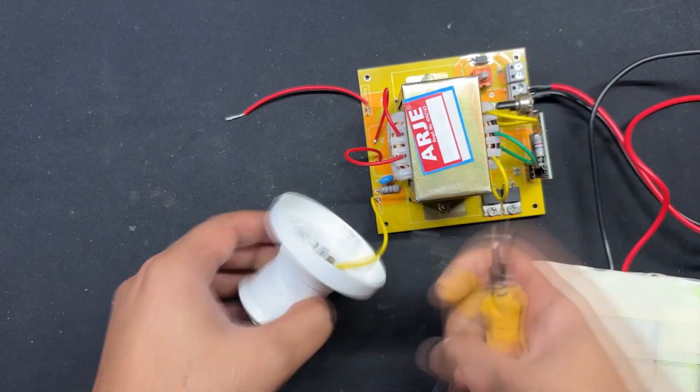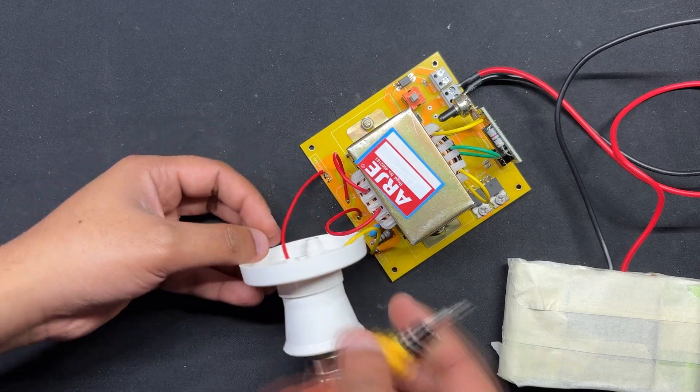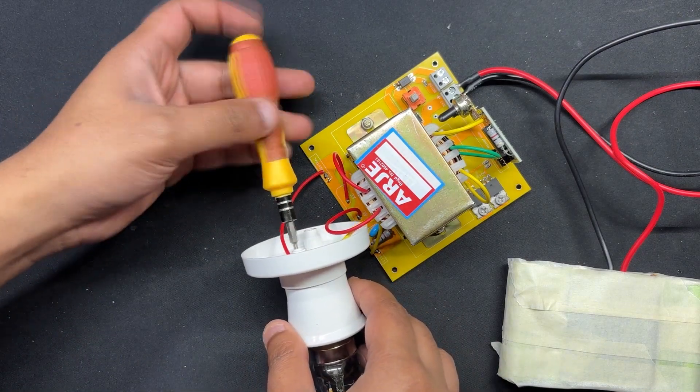We are also utilizing a regular B22 holder to connect our bulb to the AC side of our inverter. The live and neutral wires from the inverter's AC side are linked to the screw terminals on the B22 holder.